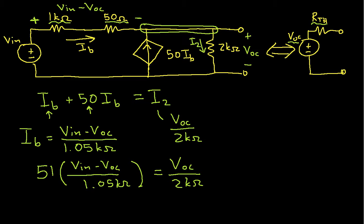And then, probably the easiest way to solve this would be to multiply both sides by 2k ohms. So I can have a 2k ohms over here and a 2k ohms over here.